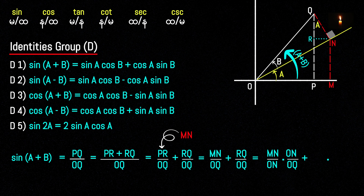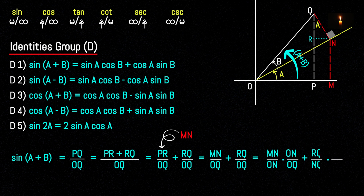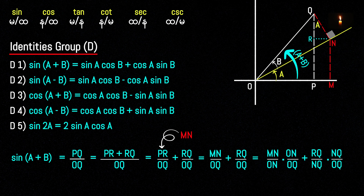So we have NQ to manipulate the line. RQ and NQ are 3, and NQ and OQ are 3. So NQ is RQ over OQ.